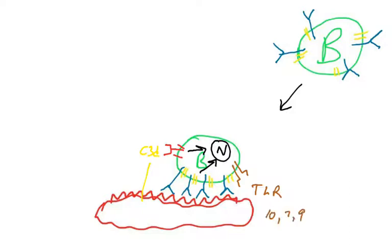B-cells have toll-like receptors, specifically TLR 10, 7, and 9, for example. And if those TLRs engage their ligand, for example, TLR 7 binds RNA, viral RNA, TLR 9 binds bacterial or viral DNA.